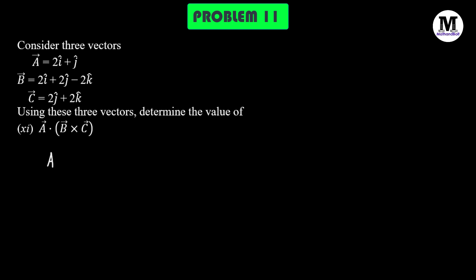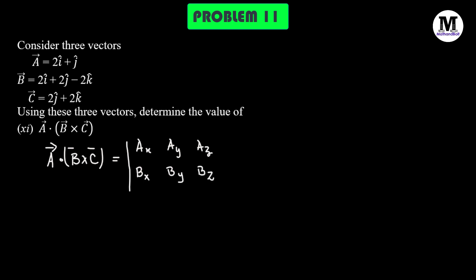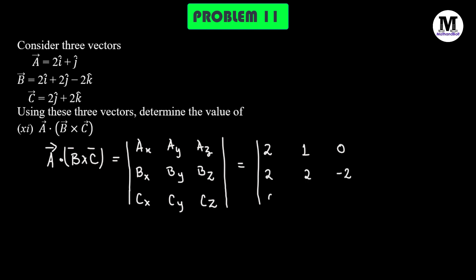Next, we need to find the scalar triple product A dot B cross C. This is defined as a 3 by 3 determinant. In the first row we have components of A: 2, 1, 0. In the second row we have components of B: 2, 2, negative 2. And in the third row we have components of C: 0, 2, 2. Expanding this determinant gives us the value 12.